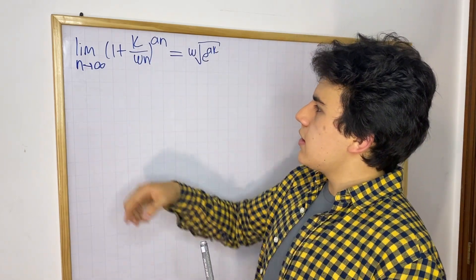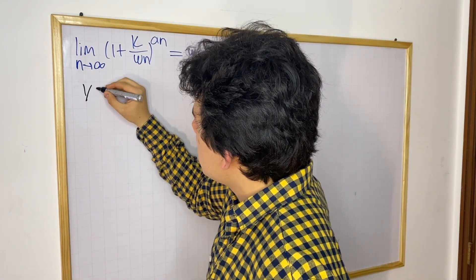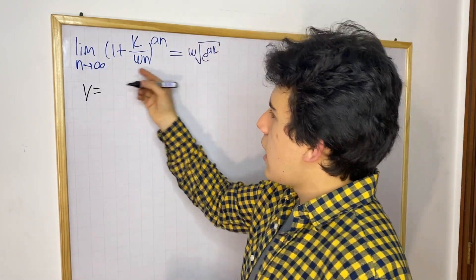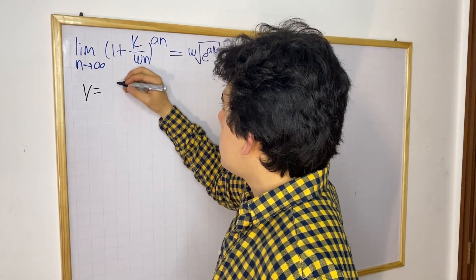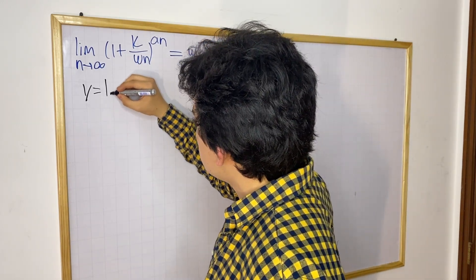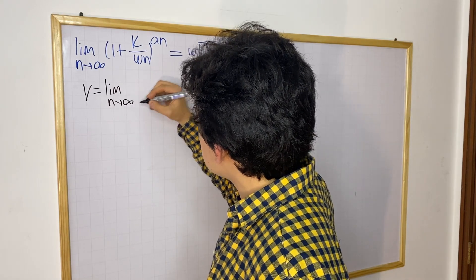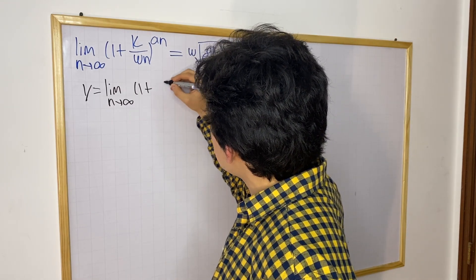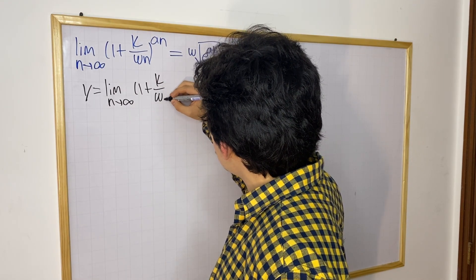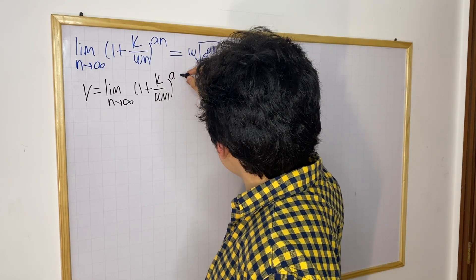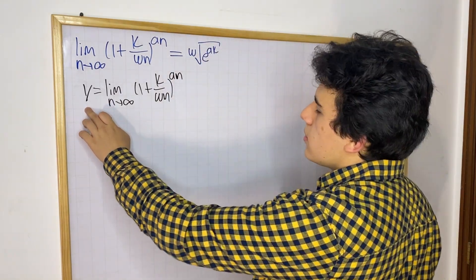I'm going to define this limit first as a variable so that we can play with it. Instead of writing the entire limit, I'm going to say that y is equal to the limit as n approaches infinity of 1 plus k over wn, to the power of a times n. Now this is going to be our variable.